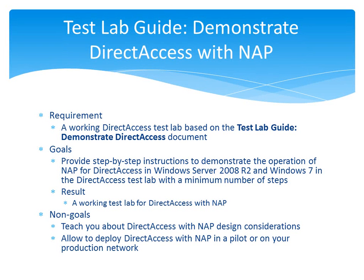A key requirement for this document is a working DirectAccess test lab that is based on the document titled Test Lab Guide: Demonstrate Direct Access. With a working DirectAccess test lab, the goals of this document are to provide you with step-by-step instructions to configure and demonstrate the operation of NAP system health evaluation requirements with a minimum number of steps, using computers in the DirectAccess test lab running Windows Server 2008 R2 or Windows 7.